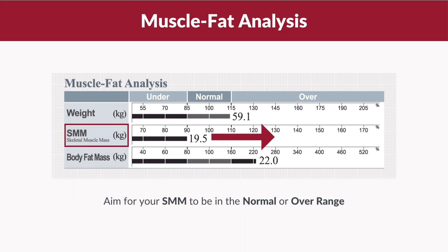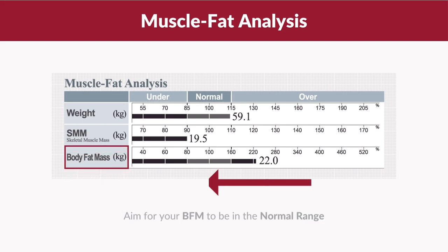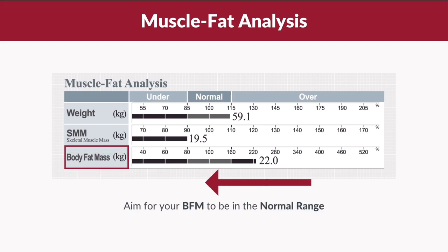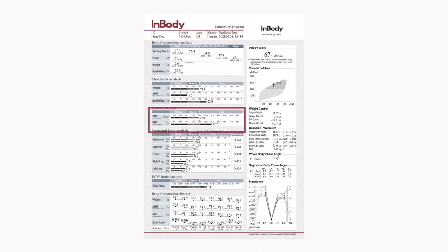In short, it is advisable to aim for your skeletal muscle mass to be in the normal or over range, and to aim for your body fat mass to be in the normal range. Let's move on to the obesity analysis.